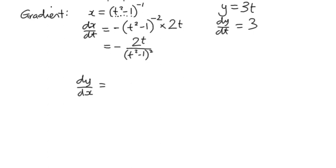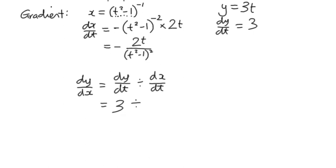To avoid a fraction pileup, you can write dy/dx as dy/dt divided by dx/dt, keeping them separate so you stay in control. So dy/dt is 3, divided by dx/dt which is negative 2t over (t² - 1) squared.